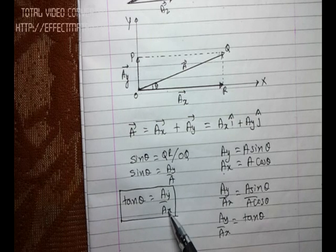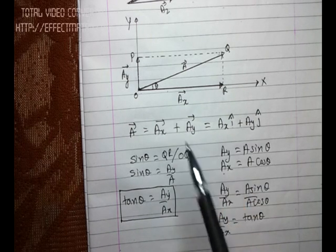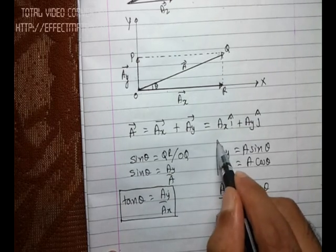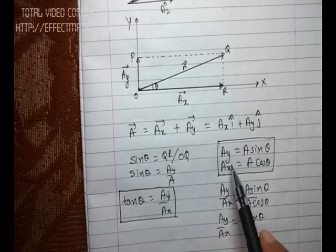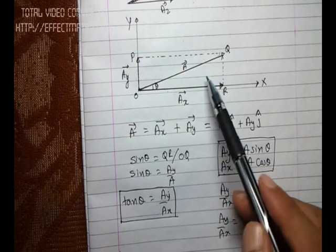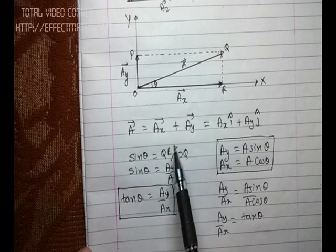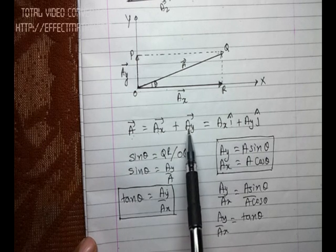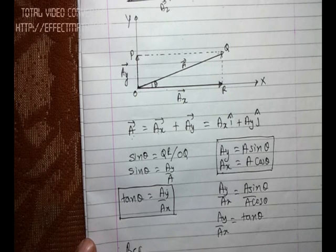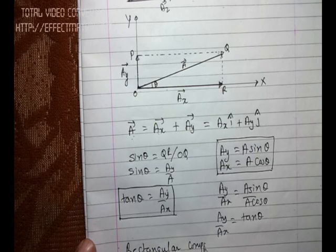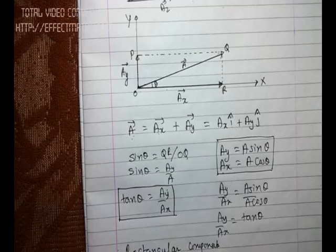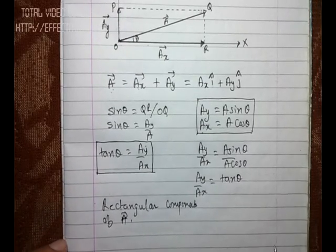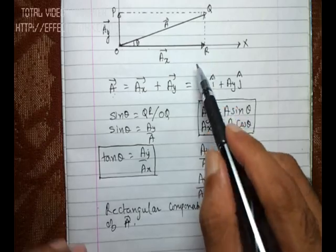This gives the relationship between the two components and the angle that vector a makes with the x-axis. Note that theta is the angle made with the x-axis, not the y-axis. So tanθ equals a_y over a_x. Coming back to the equation, vector a equals a_x plus a_y. Since these components are on the x and y axes, they are known as the rectangular components of vector a.